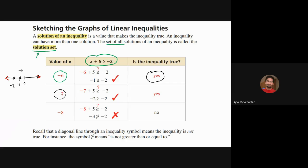Testing negative 7: −7 + 5 = −2. Is −2 greater than or equal to −2? It's not greater than, but it is equal to, and since the inequality says 'greater than or equal to,' you only need one or the other — so yes, negative 7 is a solution. Testing negative 8: −8 + 5 = −3. Is −3 greater than or equal to −2? No, −3 is actually less than −2, so negative 8 is not a solution.